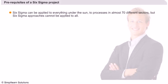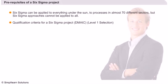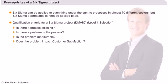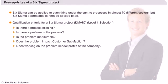The Six Sigma approach can be applied to all problems, but do all problems need a Six Sigma approach? One of the first things you need to check before deciding on a prospective Six Sigma project is the prerequisites and qualifications. The DMAIC Level 1 selection criteria asks: Is there a process existing? Is there a problem in the process? Is the problem measurable? Does the problem impact customer satisfaction?